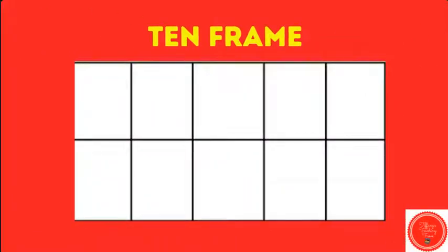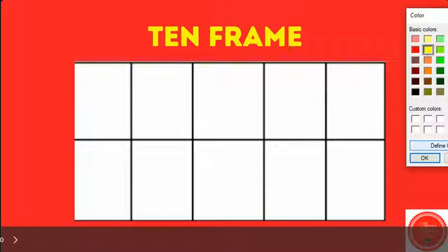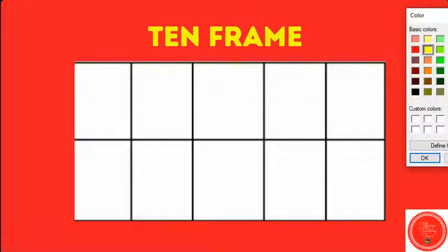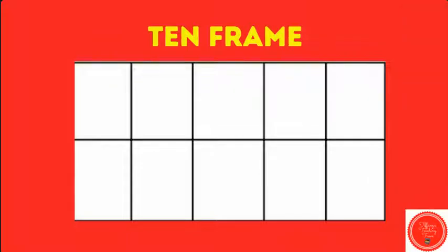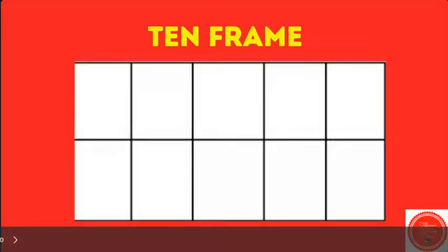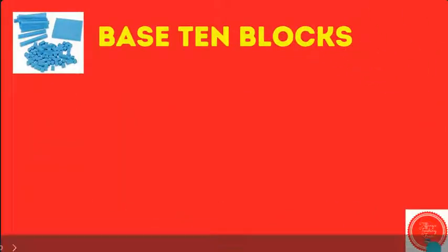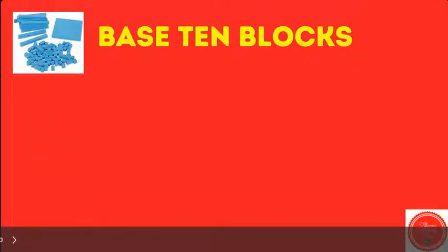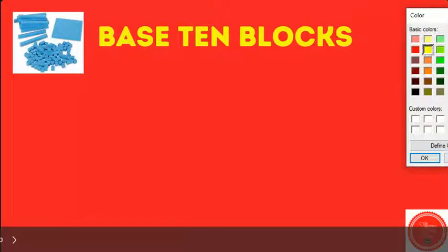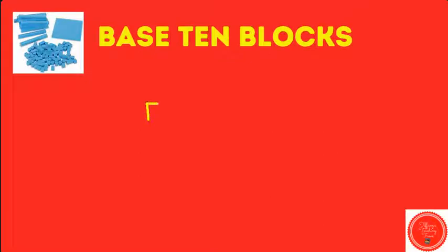Here is our 10-frame. If I want to represent the number two on a 10-frame, I'm going to make two circles. One, two. Base 10 blocks — one, two. Two small blocks show the number two.